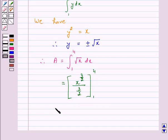And this is again equal to (2/3) times [4^(3/2) - 1^(3/2)].